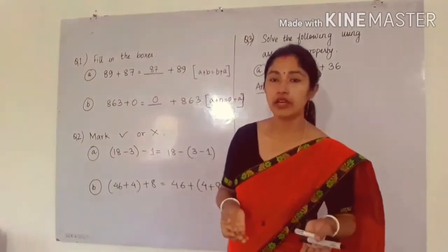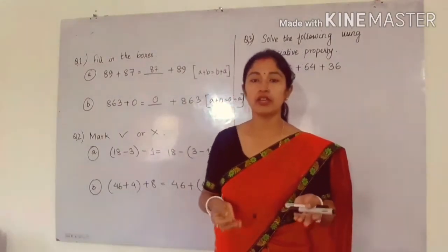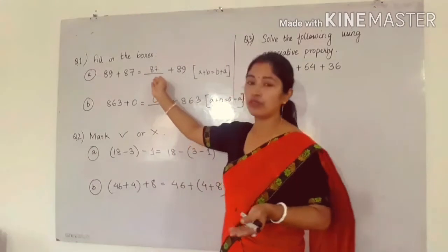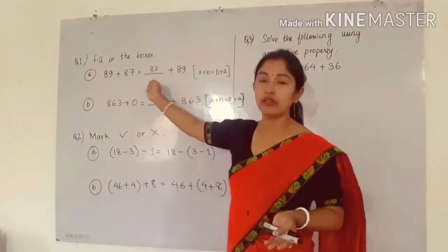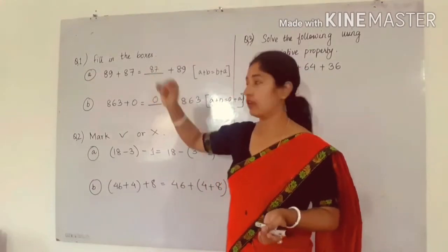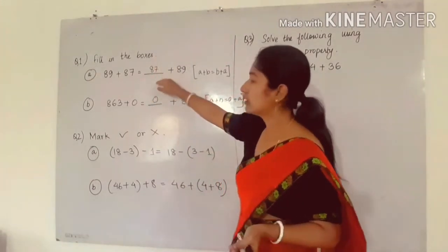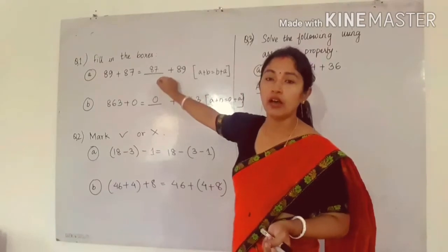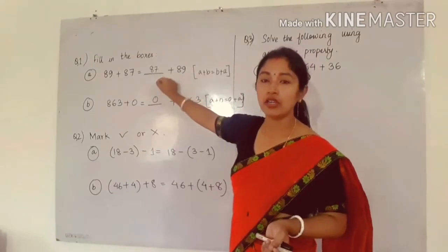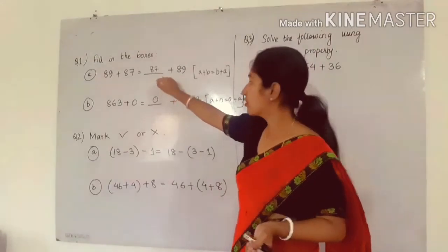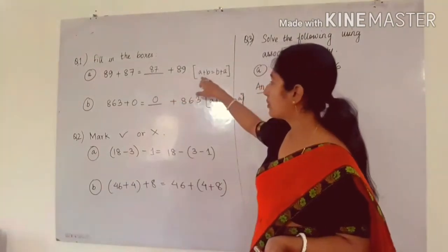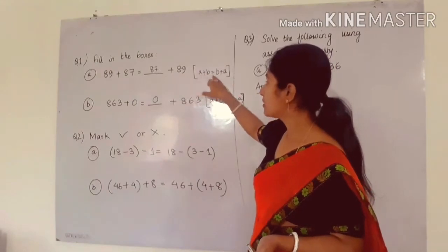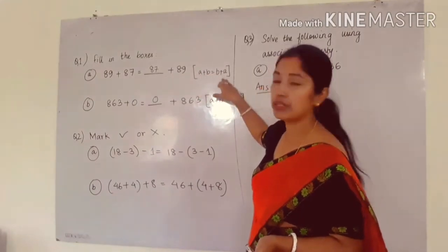So left hand side is equal to right hand side when in blank space we put the value 87. Here we are using the commutative property for addition in whole numbers. According to commutative property, A plus B is equal to B plus A.